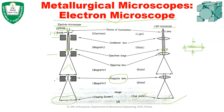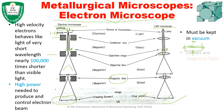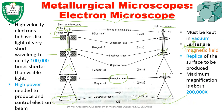The electron microscope requires high power and also requires a vacuum to control the electrons — without vacuum, the electrons would be deflected. A plastic replica of the surface is produced to investigate it under the electron microscope or light microscope. The magnification achievable with an electron microscope can reach 200,000x.